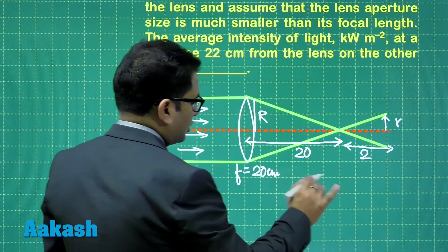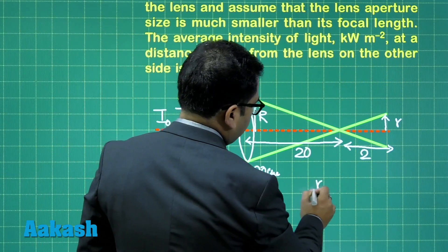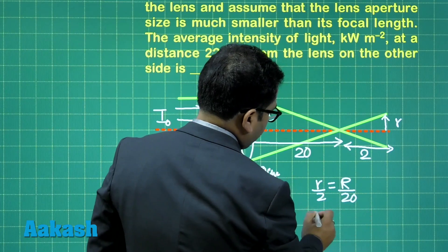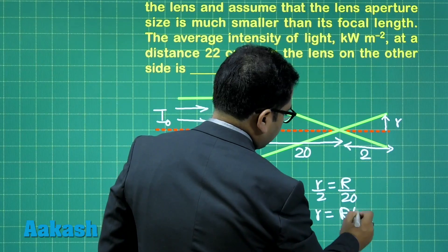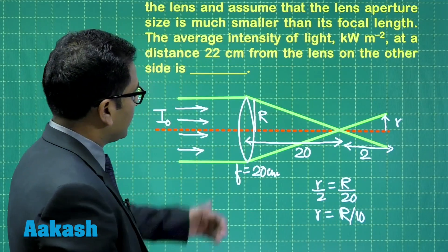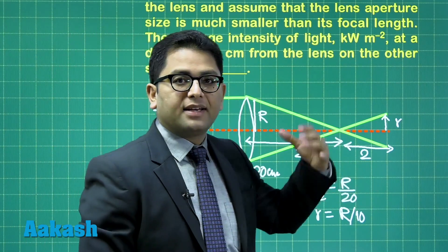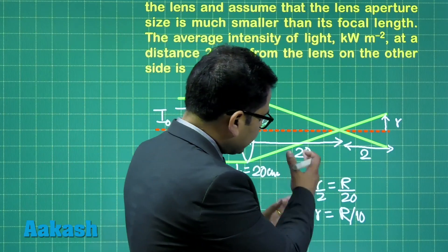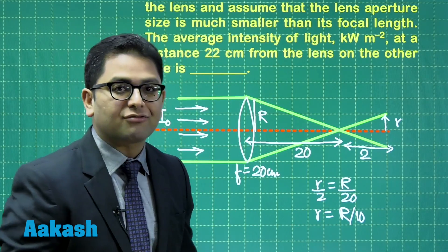Using similar triangles: r by 2 equals R by 20. So straightforward, small r equals capital R by 10. In other words, the radius changes by 10 times, so the area would also be changing by 100 times.